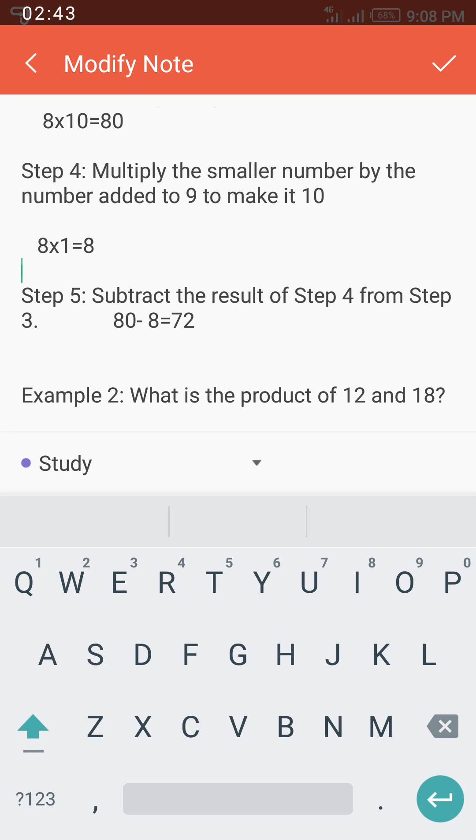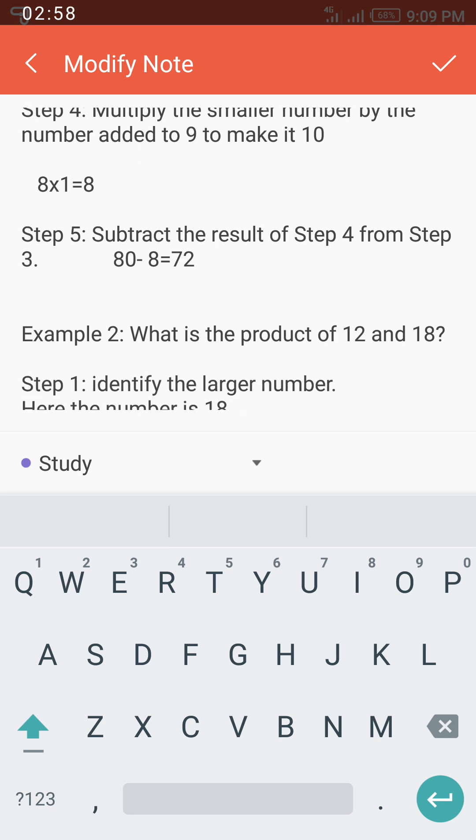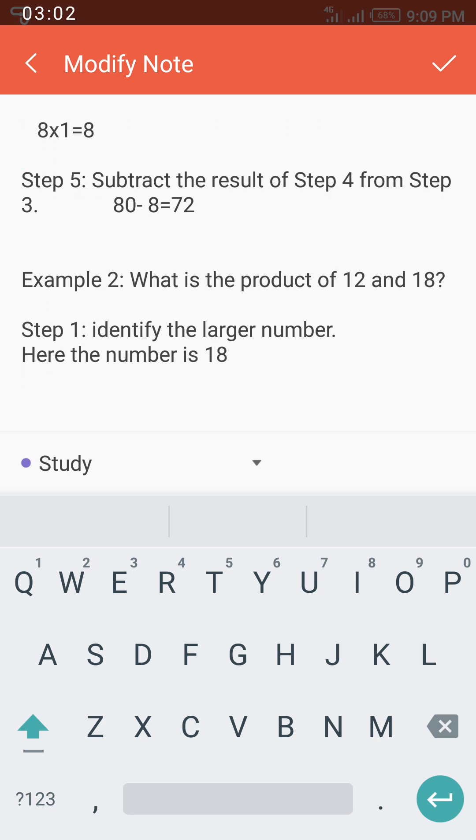The final step, which is Step 5, says that you should subtract the result of Step 4 from Step 3. The result of Step 4 is 8, so you are going to subtract 8 from 80. You see eventually our result is 72. Now to make it more clear, let's look at Example 2.